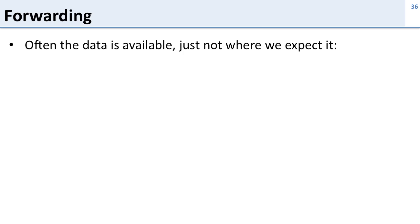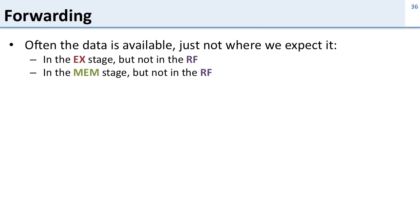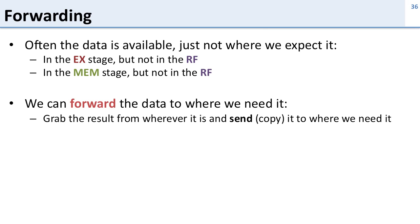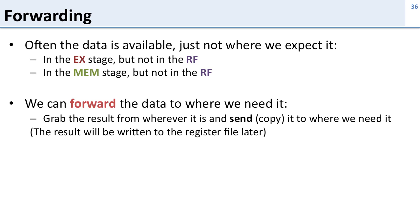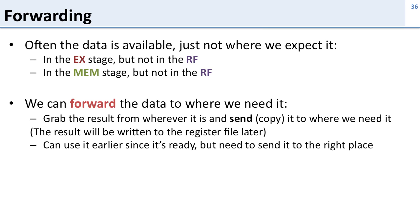Forwarding helps in the case when the data is available but it's not where we expect it — maybe it's in the execute stage or the memory stage but not in the register file. With forwarding, we can grab the result from wherever it is and send a copy of it to wherever we need it. The result is still going to be written to the register file as normal, but we get that copy earlier. This allows us to avoid having so many stalls or bubbles in our pipeline.